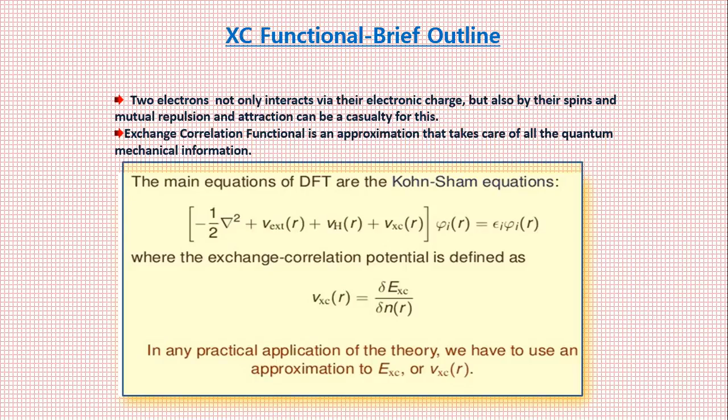And now see, the exchange correlation functional is an approximation that takes care of all the quantum mechanical information, right? Okay, so these are the main equations of DFT. So now you can see it's just like an ordinary equation: this is the kinetic energy term and here are the potential energy terms. Now V_XC is the exchange correlation potential.